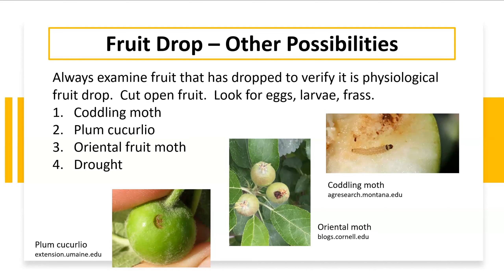For example, it could be a codling moth. The codling moth larva will be on the inside of the fruit, and there will probably be some sort of injury on the outer edge of the fruit where the moth actually laid its eggs inside of that particular fruit.